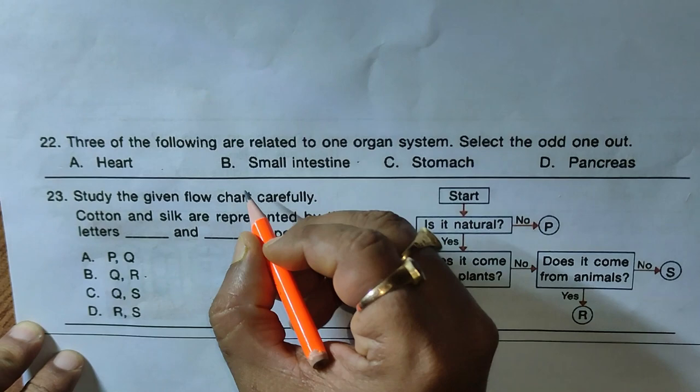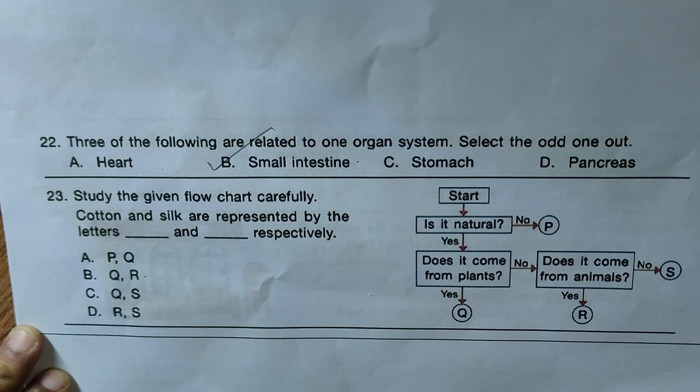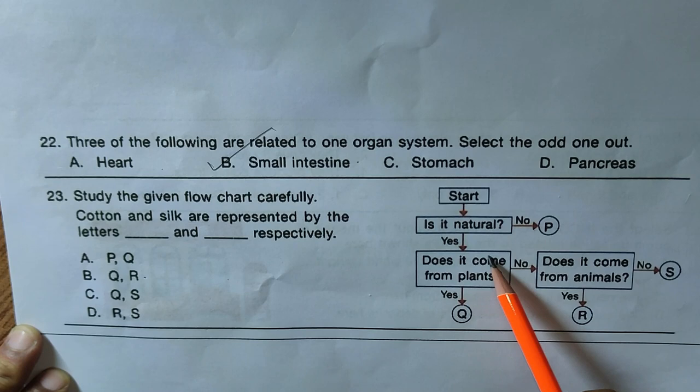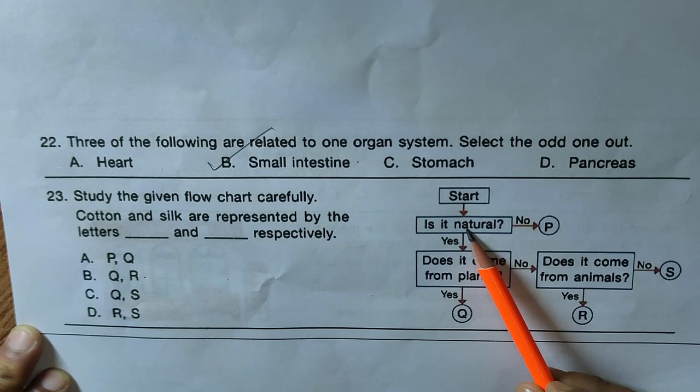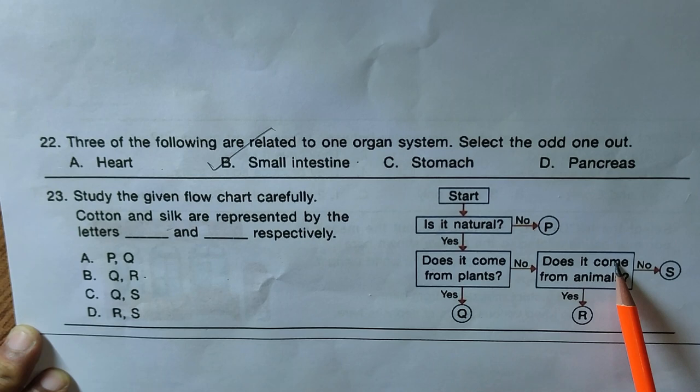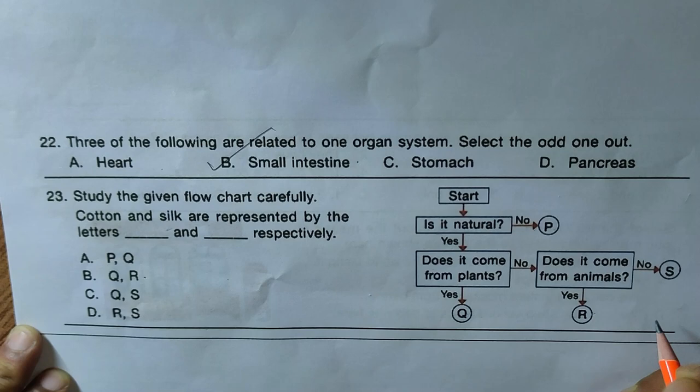Question twenty-three: study the given flowchart — cotton and silk are represented by which letters? Starting the flowchart: is it natural? Yes — does it come from plants? Yes — that is Q, which is cotton. For silk: is it natural? Yes — does it come from plants? No — does it come from animals? Yes — silk comes from silkworms, so that is R. Cotton is Q and silk is R, which corresponds to option B.